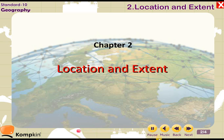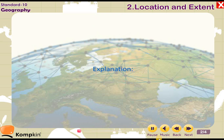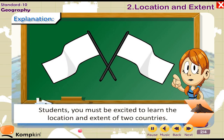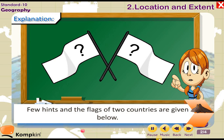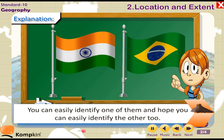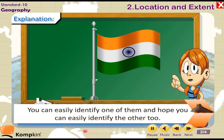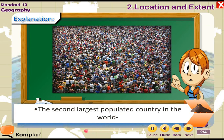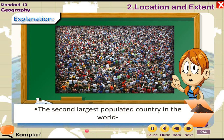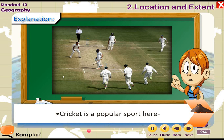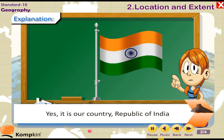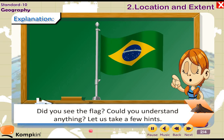Welcome to the location and extent lesson. Students, you must be excited to learn the location and extent of two countries. Hints and flags of the two countries are given below — using them, identify these two countries. Clue: the second largest populated country in the world, famous for spices, where cricket is a popular sport. Yes, it is our country — Republic of India. Did you see the flag?